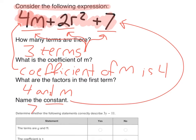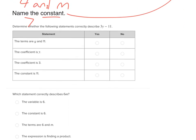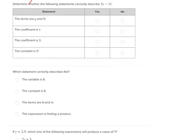Now we've got some examples that you don't copy down. First example. Determine whether the following statements correctly describe 3y minus 11. The terms are y and 11. That's a big no, because the terms are 3y and 11. So that's false.